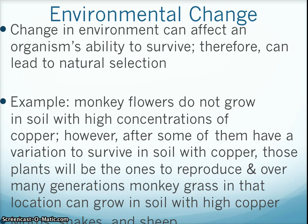Environmental changes are also selection pressures. A change in environment can affect an organism's ability to survive, and therefore can lead to natural selection. For example, monkey flowers do not grow in soil with high concentrations of copper. However, after some of them have a variation to survive in soil with copper, those plants will be the ones to reproduce over many generations, and monkey flowers in those locations can grow in soil with high copper. Also, think about the environmental changes you saw in the moth, snake, and sheep activities. The ones with the advantageous variations will survive and hopefully reproduce so they can pass on their advantageous traits to their offspring.